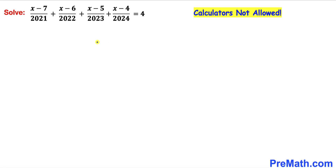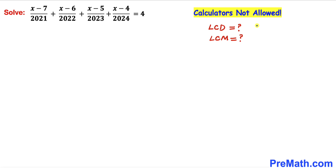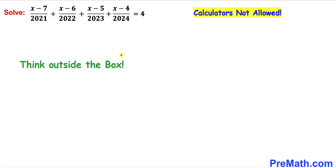Let's get started with the solution. Since we are dealing with rational equations, look at these denominators: 2021, 2022, 2023, and 2024. One option is to calculate the least common denominator, or least common multiple. However, that method is going to be very long and tedious, so we are going to think outside the box. Now let's focus on the right-hand side — we have the number 4.